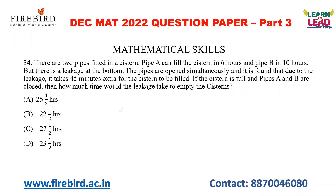There are two pipes fitted in a cistern. Pipe A can fill the cistern in 6 hours and pipe B can fill the cistern in 10 hours. But there is a leakage at the bottom. The pipes are opened simultaneously, and it is found that due to the leakage, it takes 45 minutes extra for the cistern to be filled. If the cistern is full and pipes A and B are closed, then how much time would the leakage take to empty the cistern? That is the question.